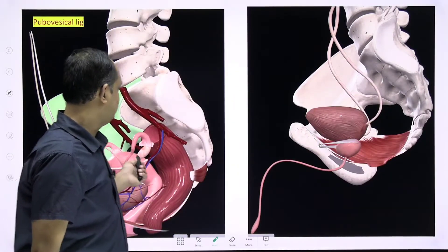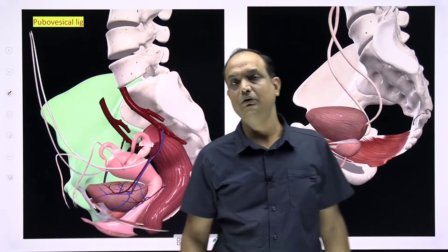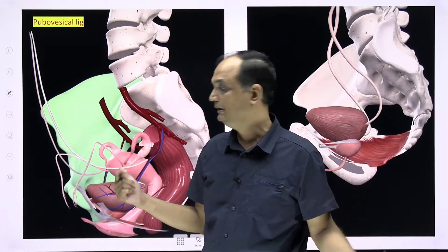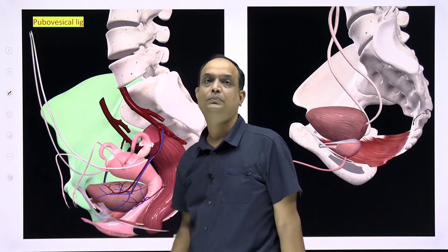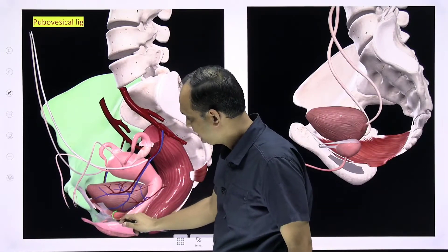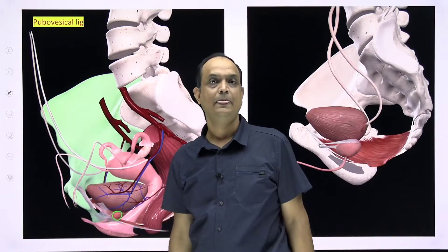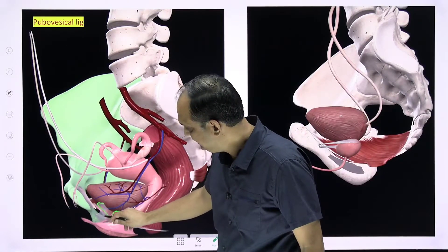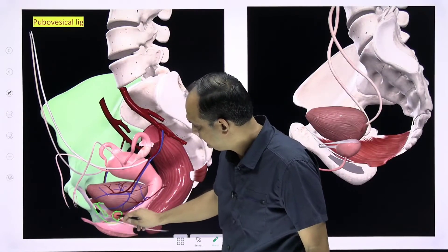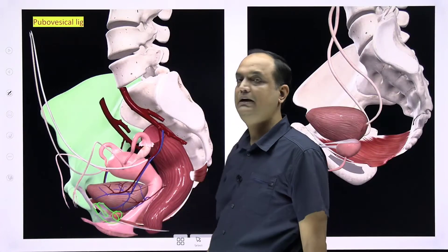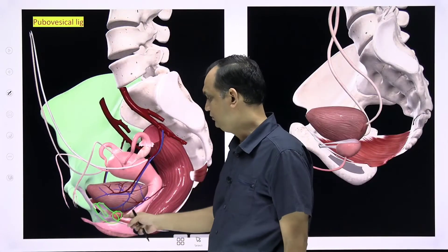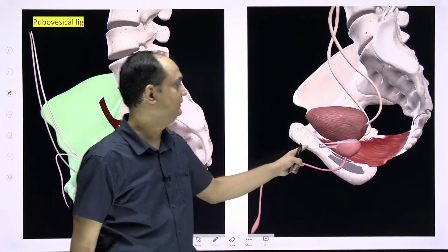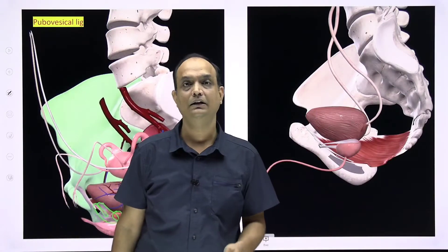In the case of the female, there is no prostate in the neck region of the bladder. So the fascia directly encloses the lower part of the urinary bladder or the neck, and this is known as the pubovesical ligament.